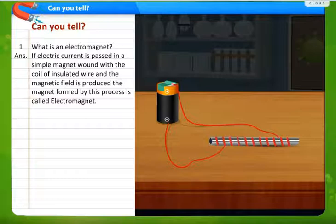If electric current is passed in a simple magnet wound, meaning turned with the coil of insulated wire, coated or covered wire, and the magnetic field is produced, the magnet formed by this process is called electromagnet.